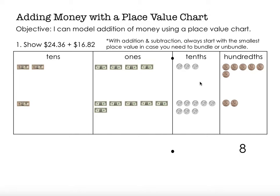Now I move to my next place value, which is the tenths place, and I'm going to count those up. I have eight here — five plus three is eight — nine, ten, eleven. So I have ten or more, so I can bundle up ten of those and exchange them for a one dollar bill. Ten dimes can be exchanged for one dollar bill — they have the same value. So I'm going to take those ten dimes, bundle them up, and exchange them for a one dollar bill. I'm only left with one dime, so I'm going to put a one in the tenths place.